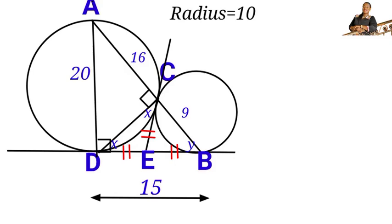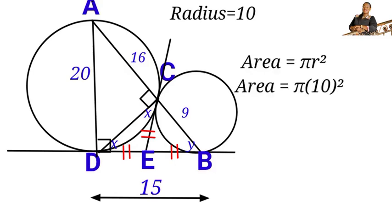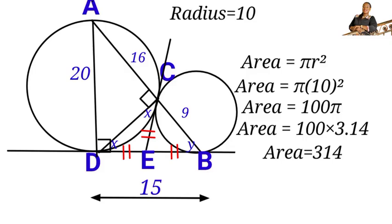Now that we have the radius, we can find the area of the big circle. Area = πr² = π × 10² = 100π. Substituting π = 3.14, the area equals 314 square units. So the area of this big circle is 100π or 314 units squared. If you have gained value in this lesson, kindly subscribe to my YouTube channel. Thank you for watching.